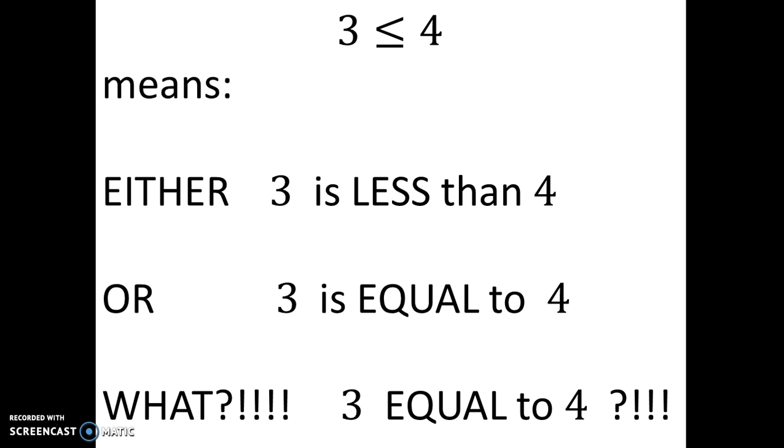So 3 is less than or equal to 4 means either 3 is less than 4 or 3 is equal to 4. 3 is equal to 4? Can that ever be possible? No. 3 can never equal 4. So the or part of that logical disjunction is redundant. It's not possible. 3 is less than 4. It is never equal to 4.